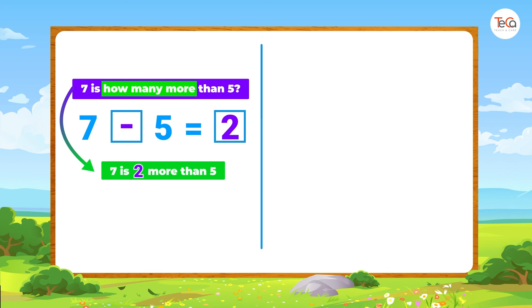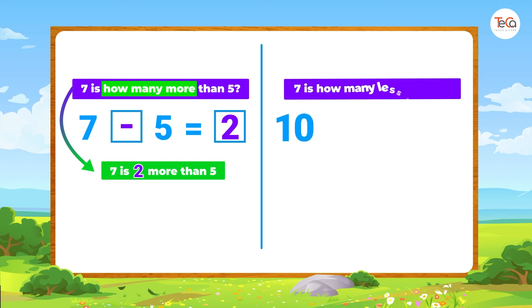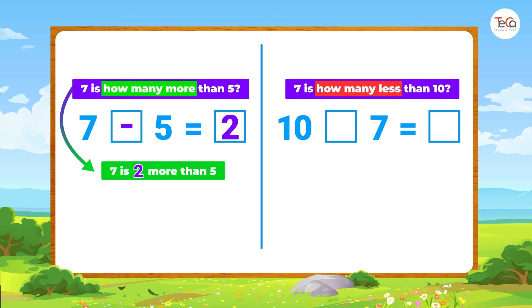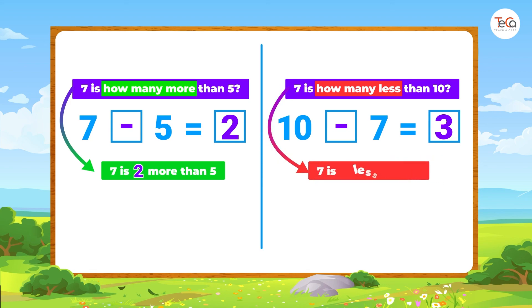Next: seven is how many less than ten? We subtract seven from ten to get three. So seven is three less than ten.